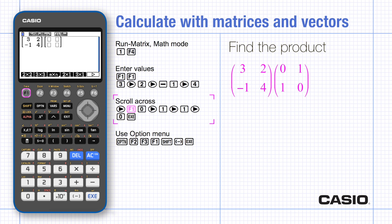Scroll right to enter a second matrix, then 2x2 and enter the values and execute.